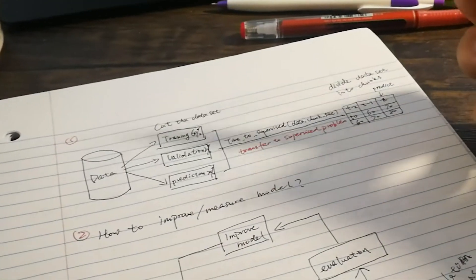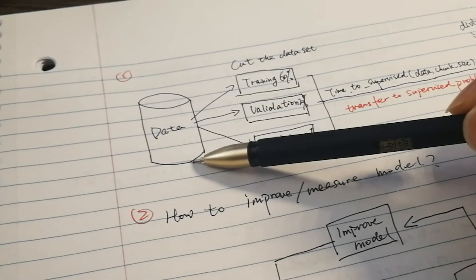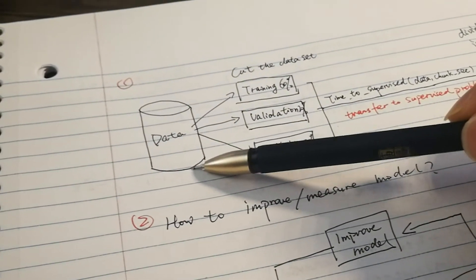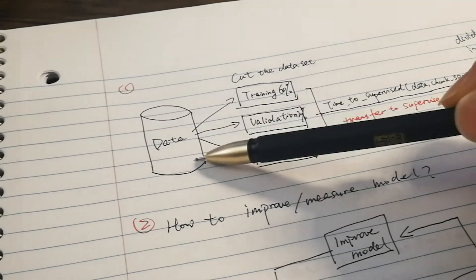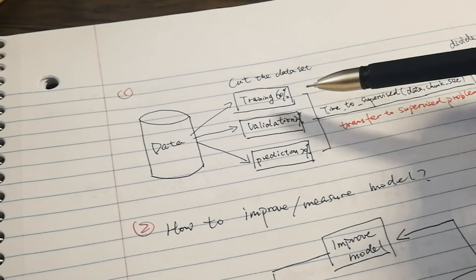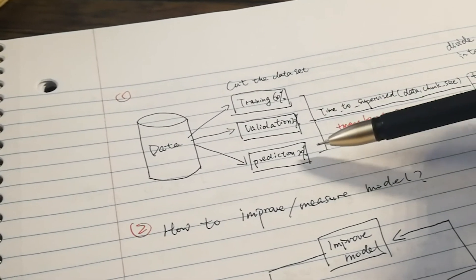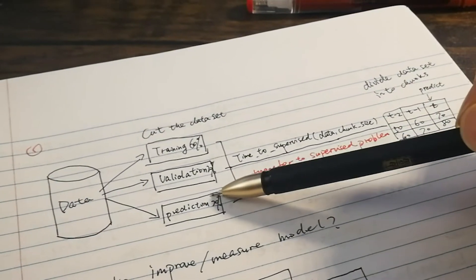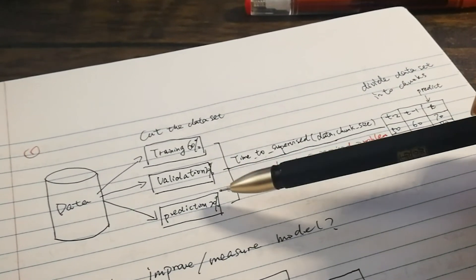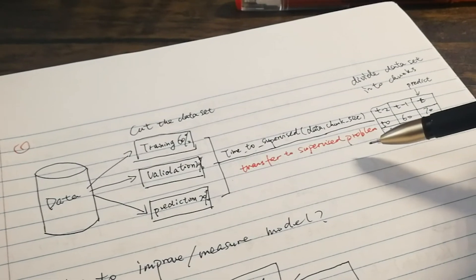So how to do the prediction? Here comes my solution. When I get the dataset, first I need to clean the dataset, and then I divide it into three parts: the first one is training, the second one is validation, and the third one is prediction. And then I need to transfer those time-series problems into a supervised problem in machine learning.